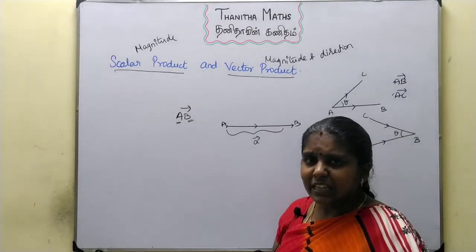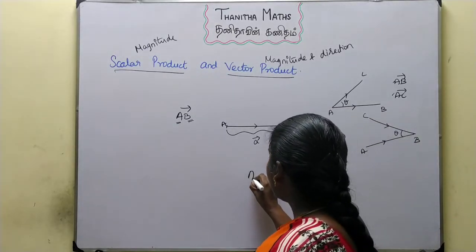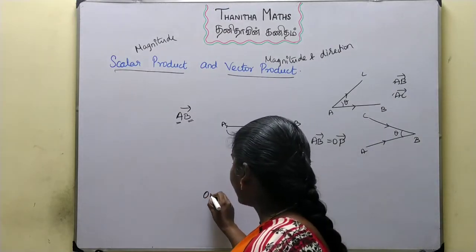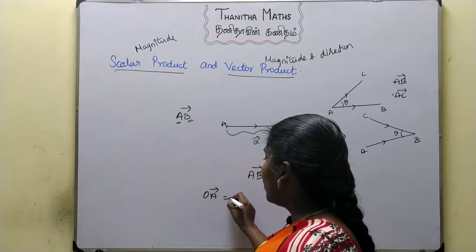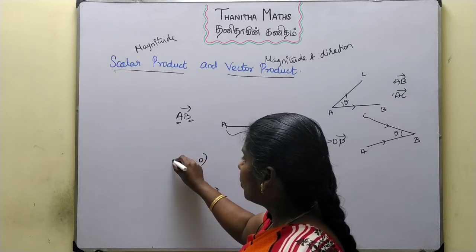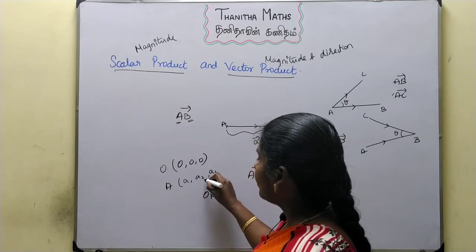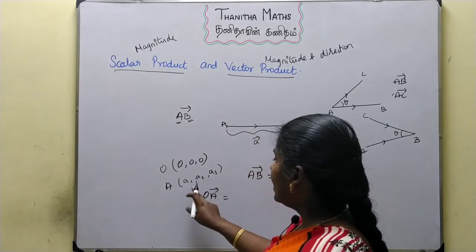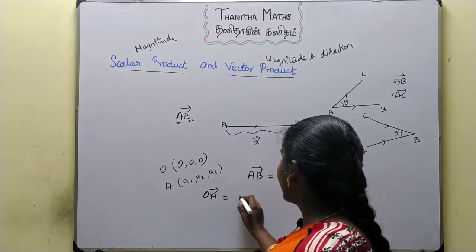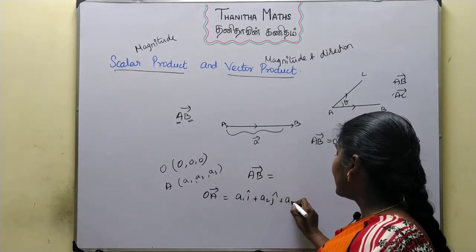The length of the vector means its magnitude. For a position vector OA, where O is at the origin (0, 0, 0) and A is at (a1, a2, a3), the vector OA equals (a1 - 0)i + (a2 - 0)j + (a3 - 0)k, which gives a1·i-vector plus a2·j-vector plus a3·k-vector.